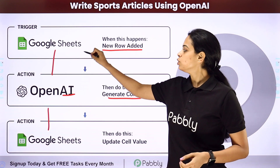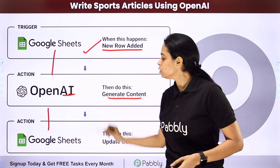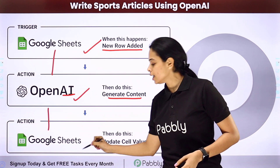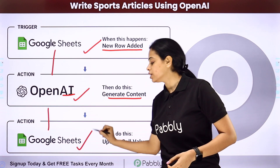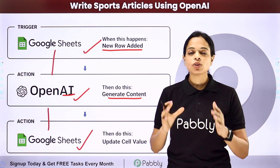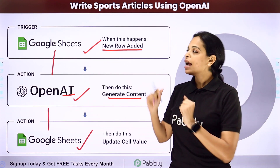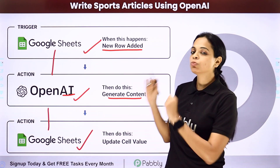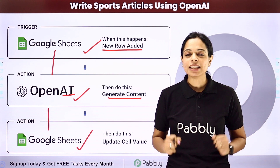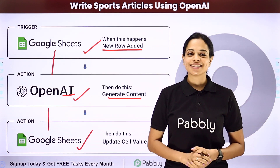Your trigger application would be Google Sheet, your action application would be OpenAI, and then again Google Sheet. Now let me show you how to integrate and automate this entire process and write sports articles automatically.